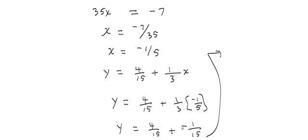And that means that y is equal to 4 over 15 plus, and this is going to be a negative 1 over 15. Well, 4 fifteenth minus, in other words, 4 over 15 minus 1 over 15 is 3 over 15. So that means that y is equal to 1 over 5. That simplifies. So the solution is x is a negative 1 fifth, and y is a positive 1 fifth.